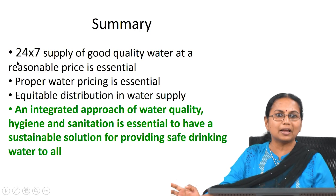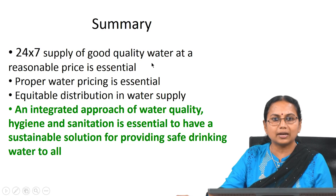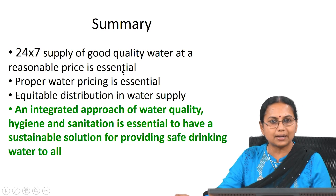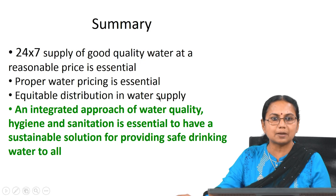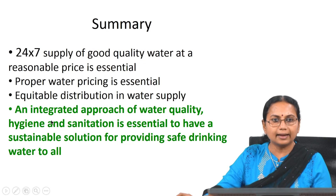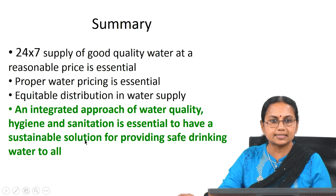In summary, 24/7 supply of good quality water at a reasonable price is essential, along with proper water pricing so the system improves and equitable distribution is ensured. An integrated approach of water quality, hygiene, and sanitation is essential to have a sustainable solution for providing safe drinking water to all. With this, the class ends. Thank you.